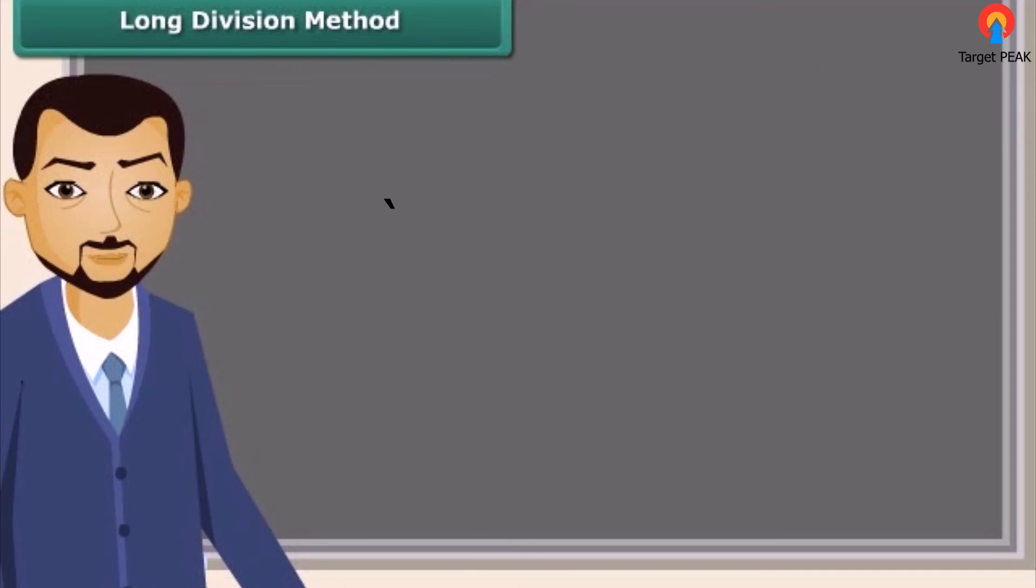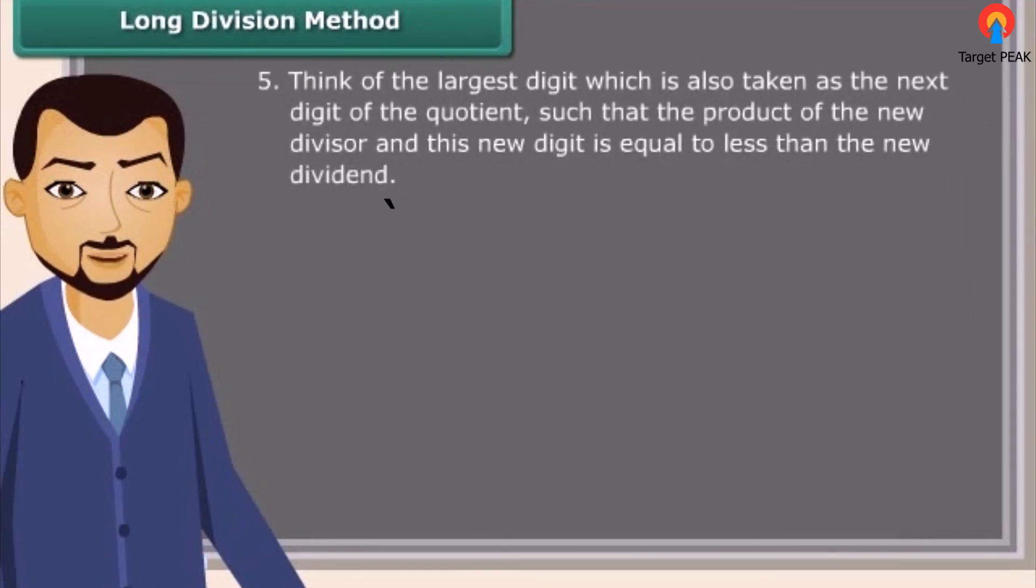Now, double the divisor. Next, think of the largest digit which is also taken as the next digit of the quotient such that the product of the new divisor and this new digit is equal to less than the new dividend. Here we have 124 multiplied by 4 equal to 496. Since the remainder is 0, the square root of 4096 is 64.